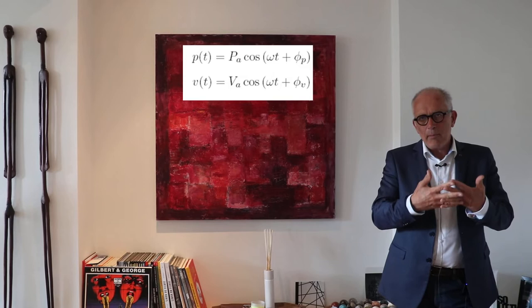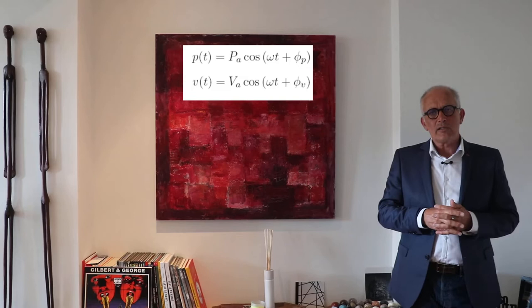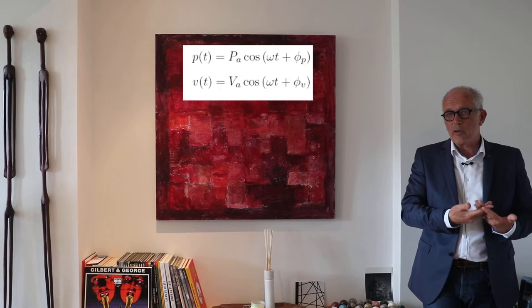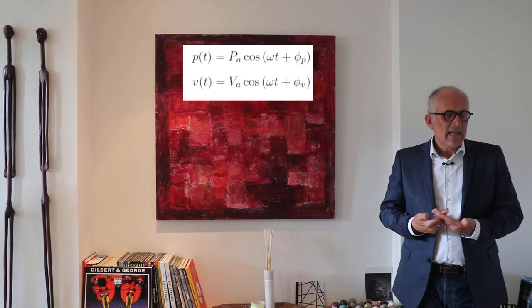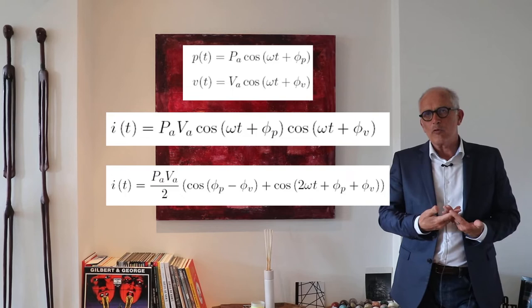So the pressure signal is a certain amplitude times cosine(ωt) plus a phase, and the velocity of course occurs at the same frequency, the same pulsation, but has a different amplitude and a different phase. If I take the product of these two signals and rearrange the terms using the Simpson formulas...